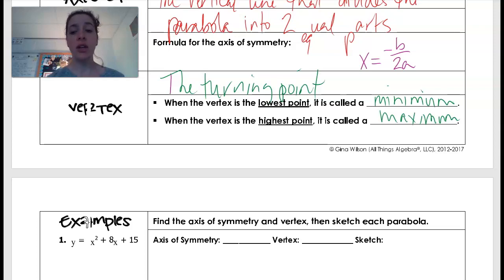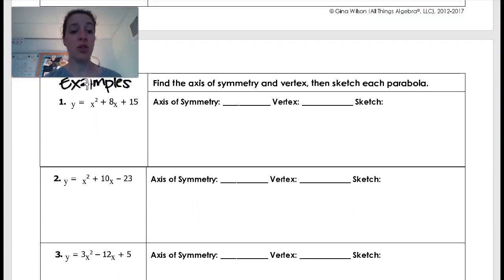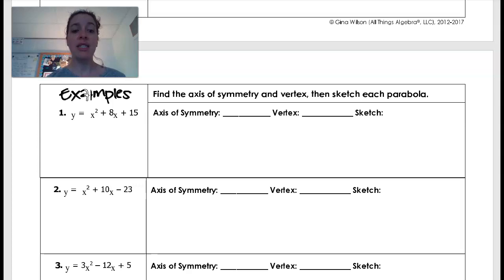Okay, so let's look at a couple examples. And then I will post the rest of the examples for you to kind of just work through and make sure you're doing it right. So find the axis of symmetry and the vertex, then sketch each parabola. Okay, so to find the axis of symmetry, remember I know that the axis of symmetry is x equals negative b over 2a.